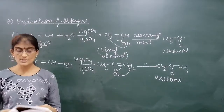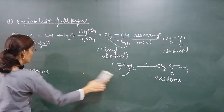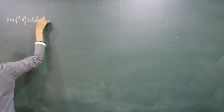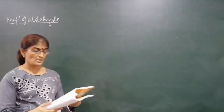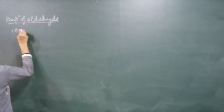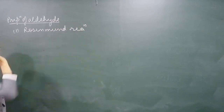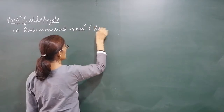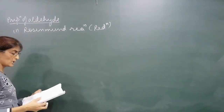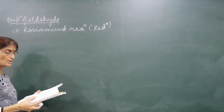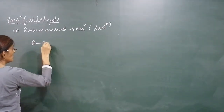Now there are some specific preparations only for aldehydes. The previous methods were common for both aldehydes and ketones. Now we are doing specific methods for preparation of aldehydes only. The first very important reaction is the Rosenmund reaction - it is a type of reduction reaction because hydrogen addition takes place.